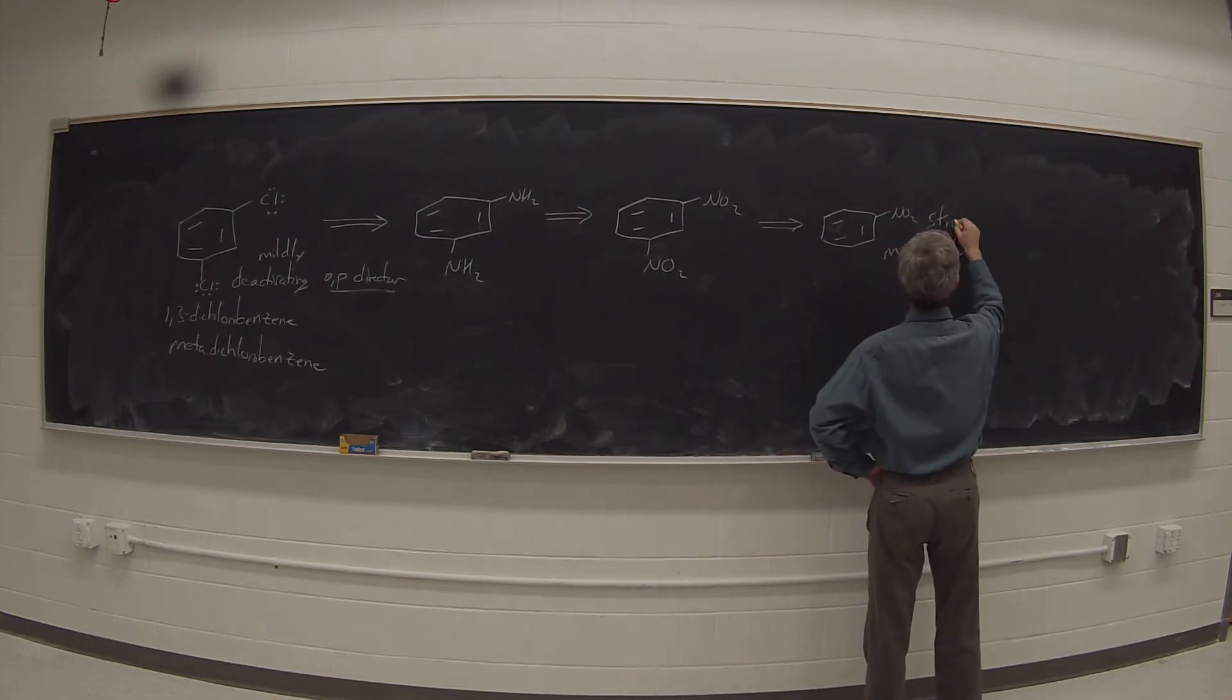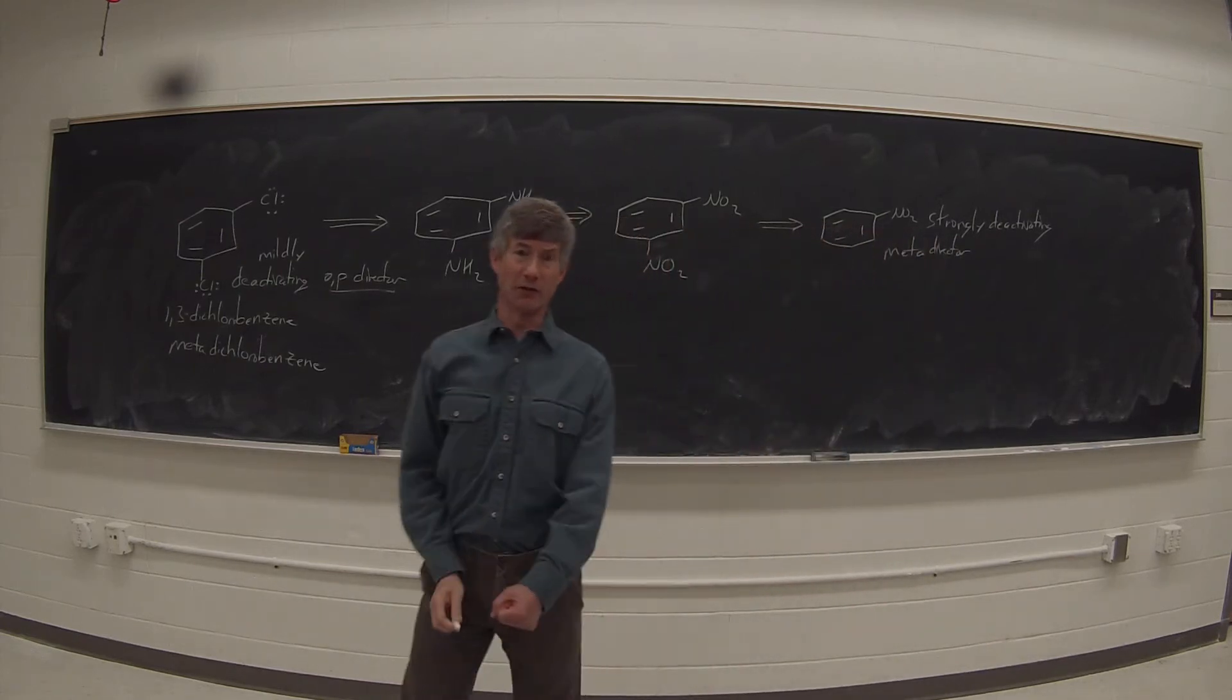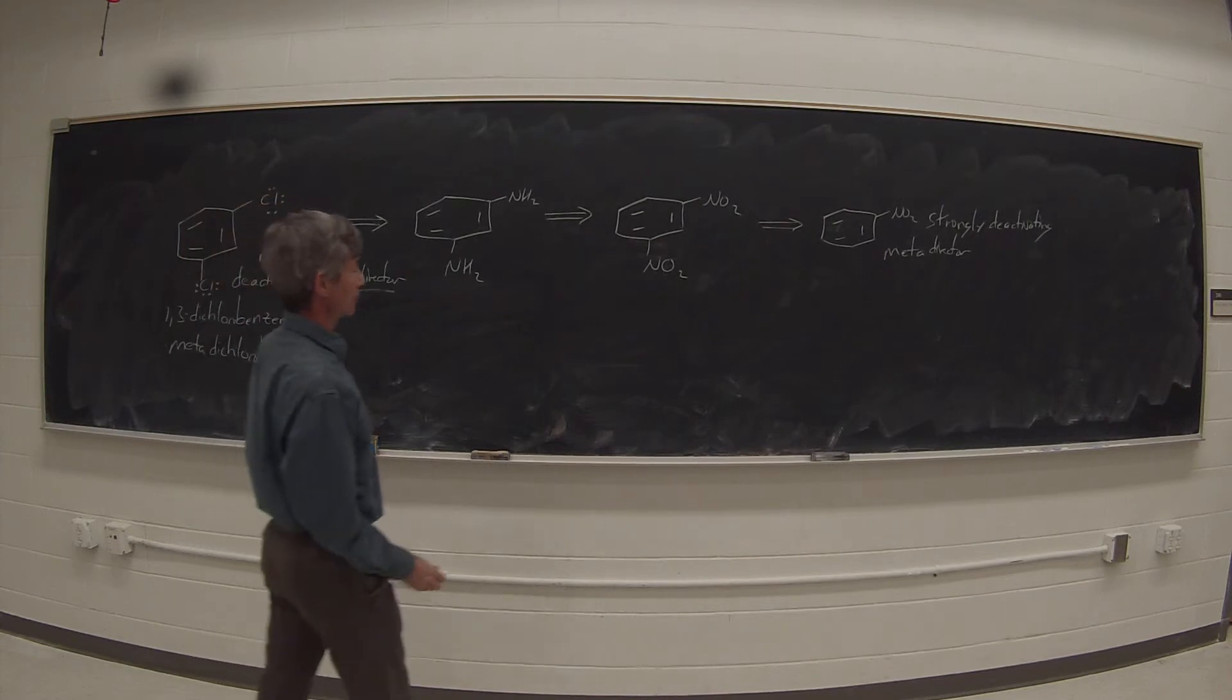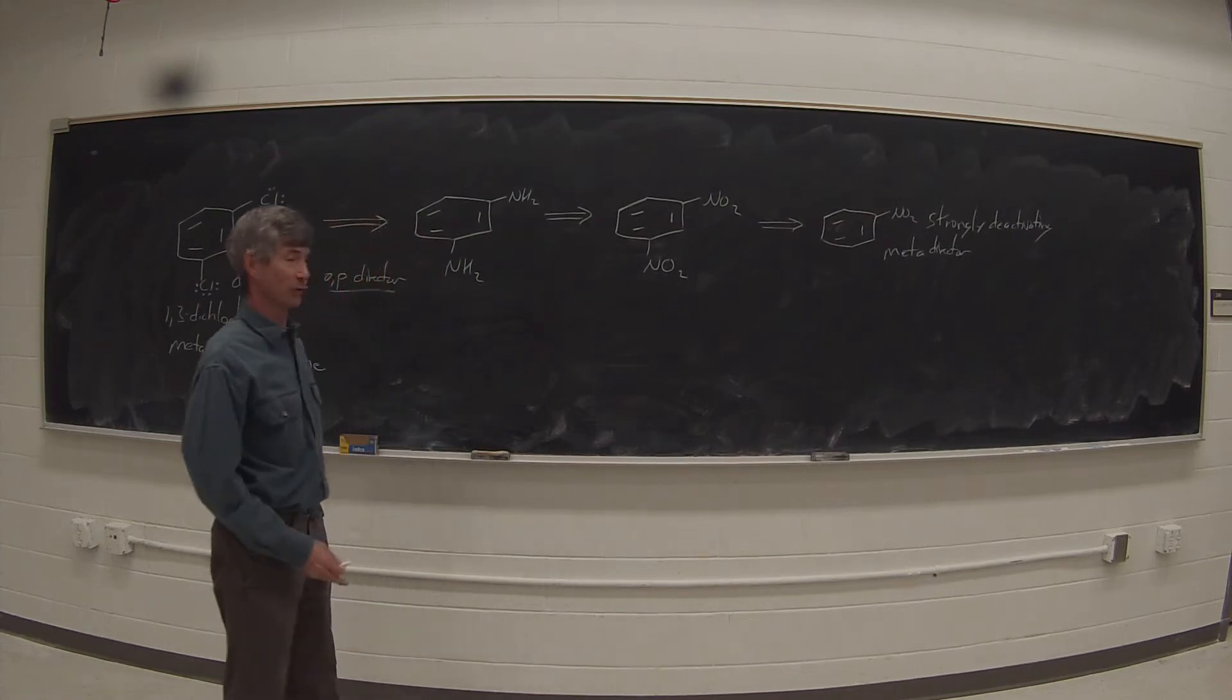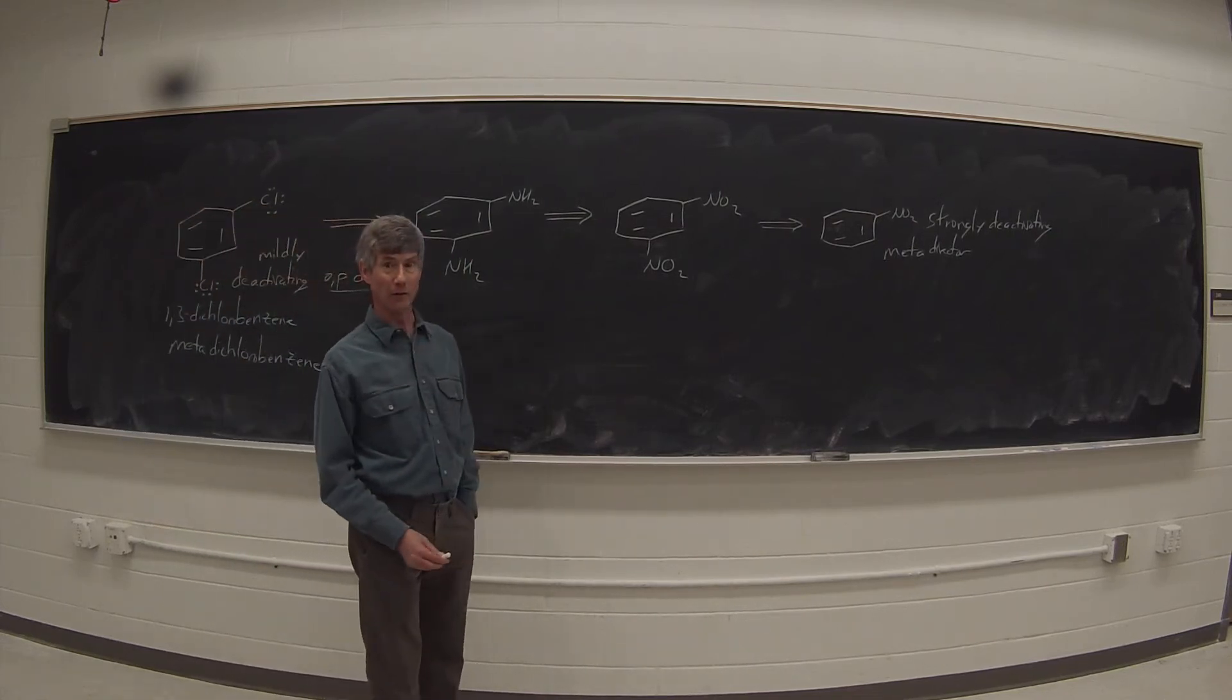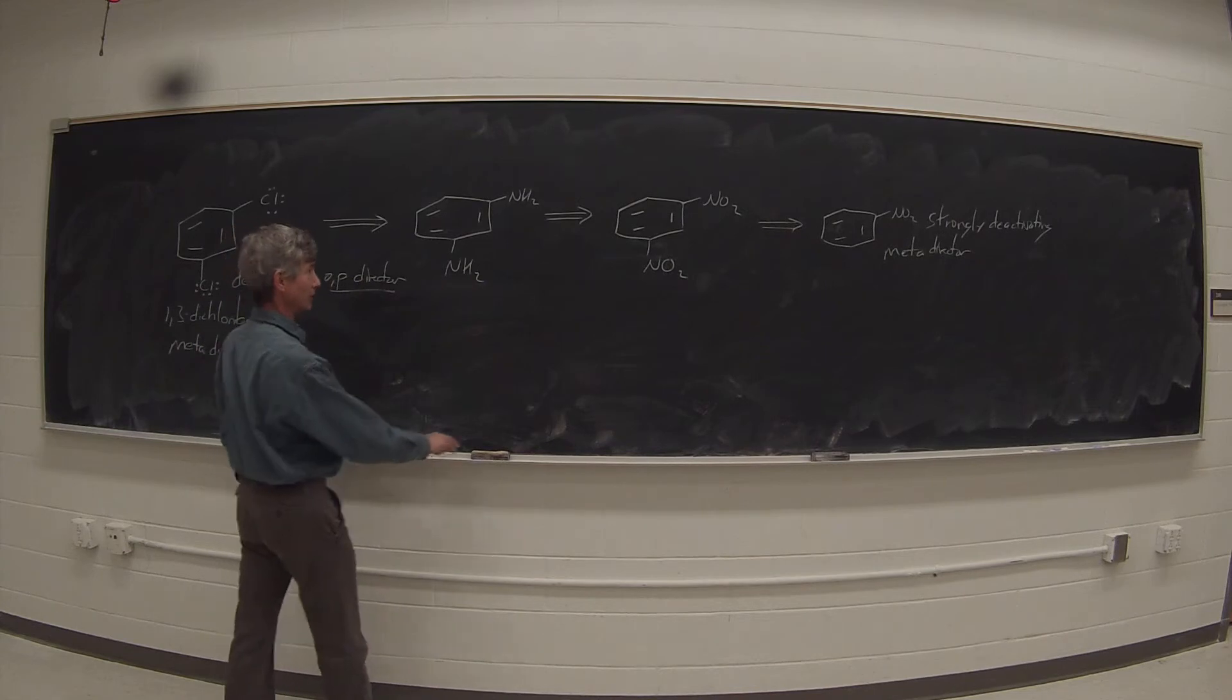It is a strongly deactivated meta-director, but nitration is an easy enough reaction to run. You can simply increase the concentration of nitric acid, or increase the temperature, or both, in order to force up to three nitro groups to go on the ring. Trinitrotoluene, the well-known explosive, is made by taking toluene and exhaustively nitrating it under fairly harsh nitration conditions.